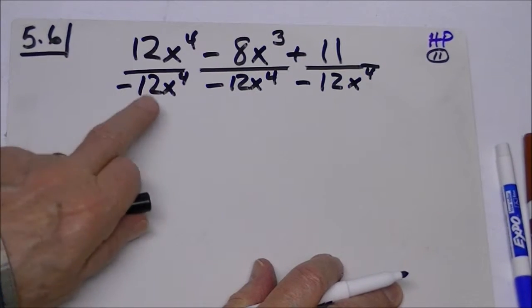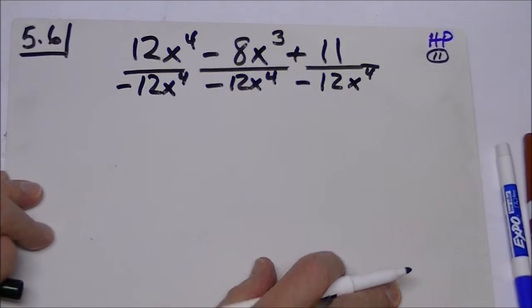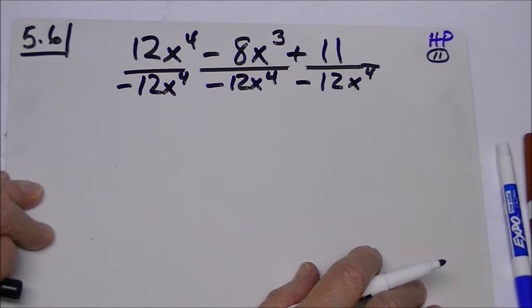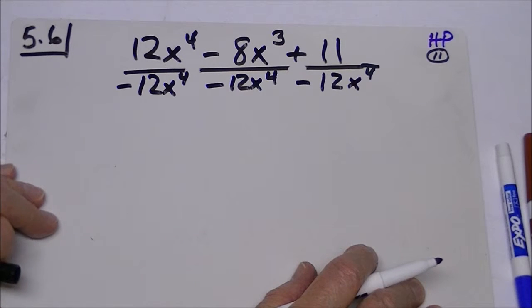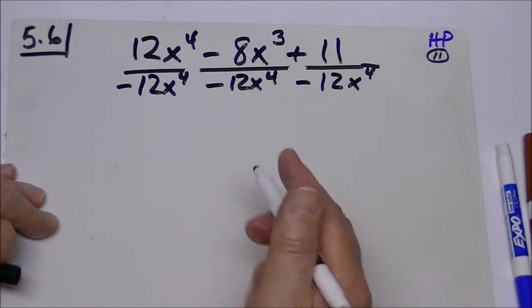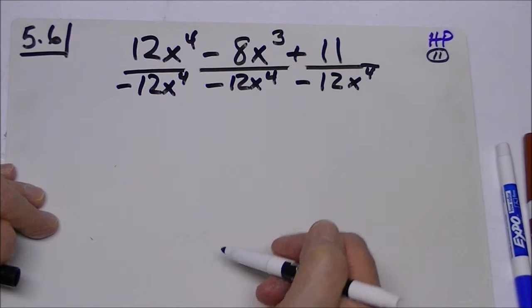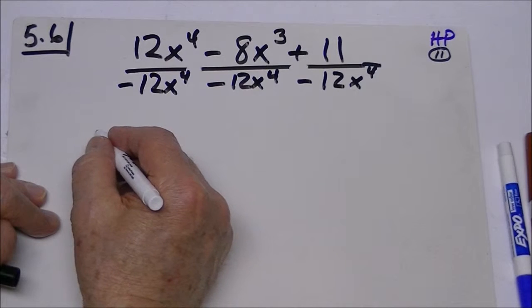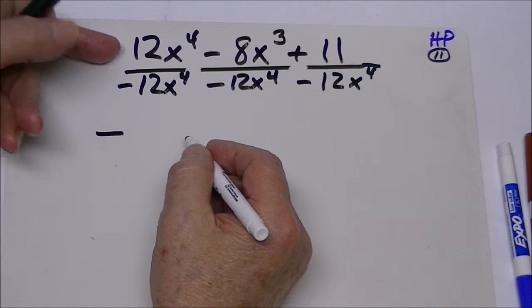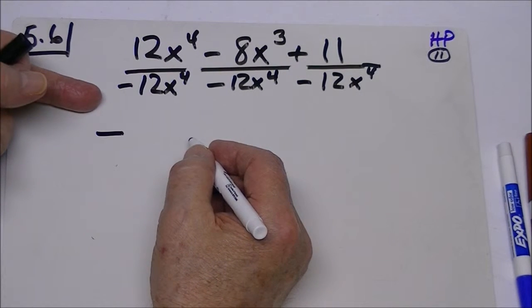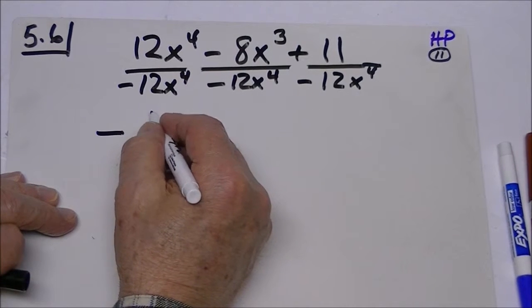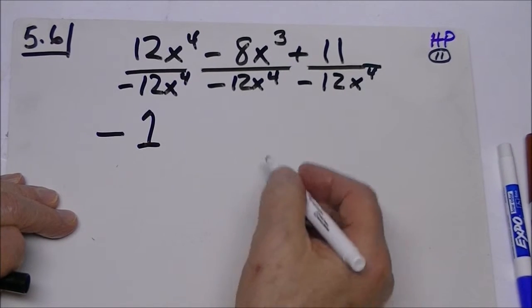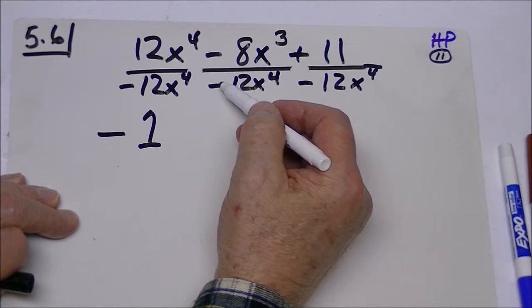So now in a sense you have three examples. You set them up as three individual terms and now you just simplify based on the things we've talked about. Here this answer will be negative, and since the numerator and denominator are the same, it's just negative one. Now here because it's a negative divided by a negative, the sign will be positive.